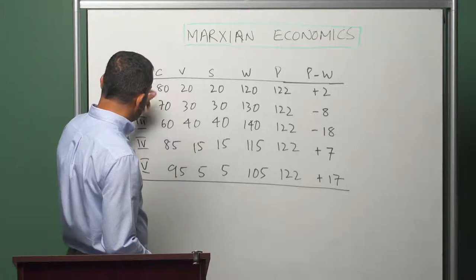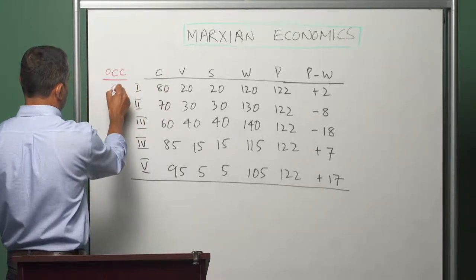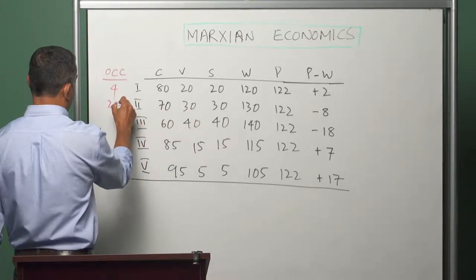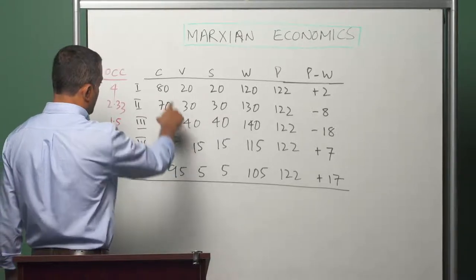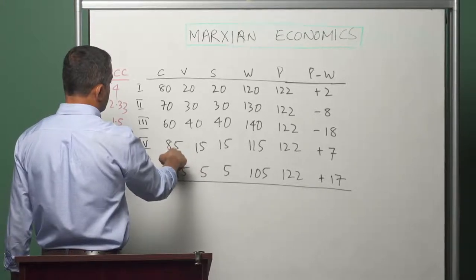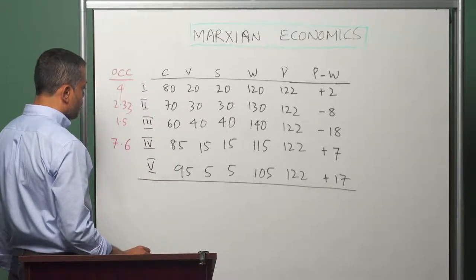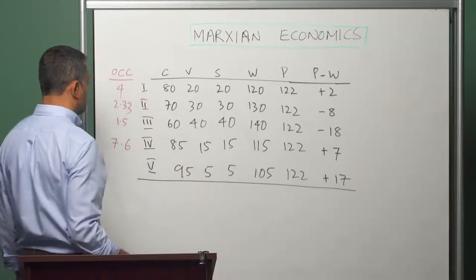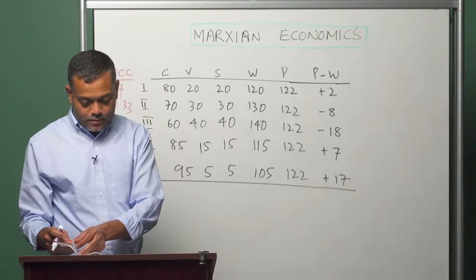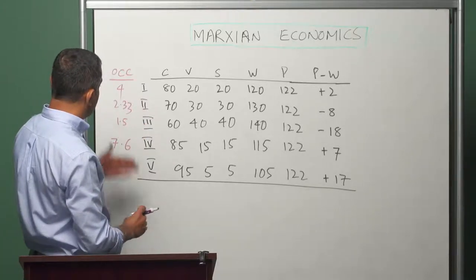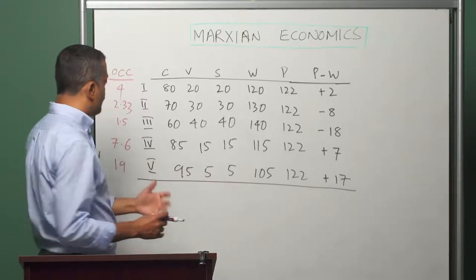Now, the constant capital as a ratio of the variable capital is the organic composition of capital. The organic composition of capital for sector 1 is 4, for sector 2 is 7/3 which is 2.33, for sector 3 is 60/40 which is 1.5, for sector 4 it is 85/15 which is 7.6, and for sector 5 it is 95/5 which is 19. We can see that the organic composition of capital varies across sectors, and therefore we can divide sectors into those which have high and low organic composition of capital.